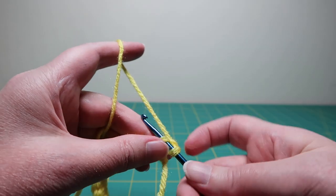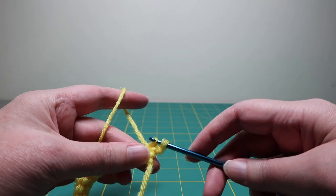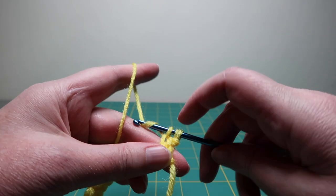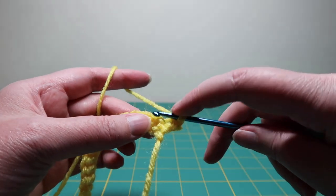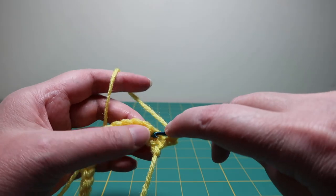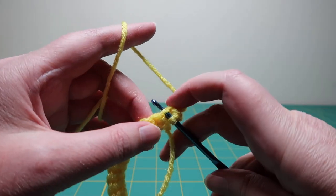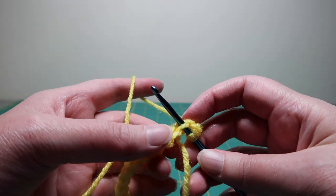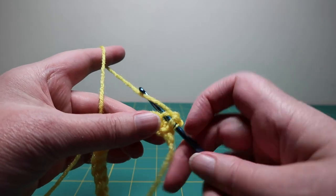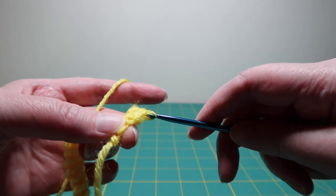So that's the next stitch, yarn over, pull through, yarn over, pull through both loops. So that's the next stitch. We're sticking it only through the first strand of the V. Yarn over, pull through, yarn over, pull through again.